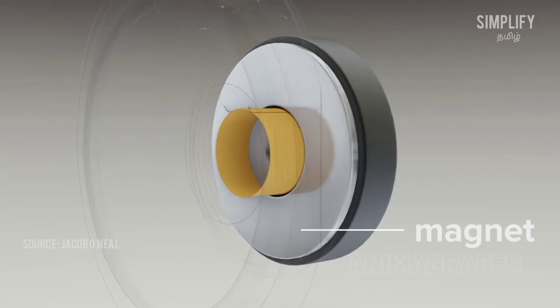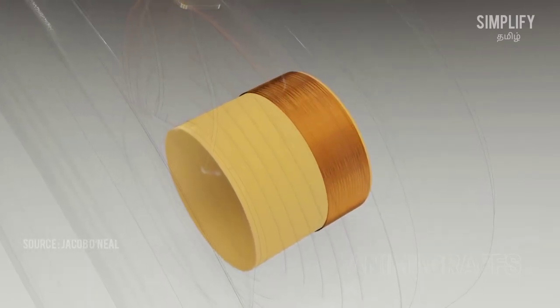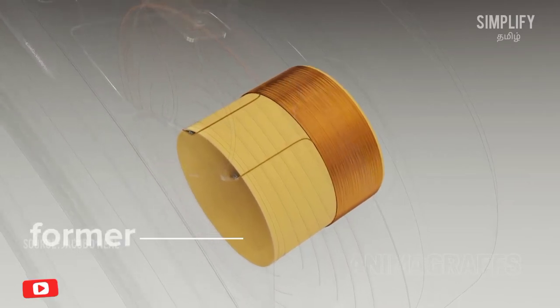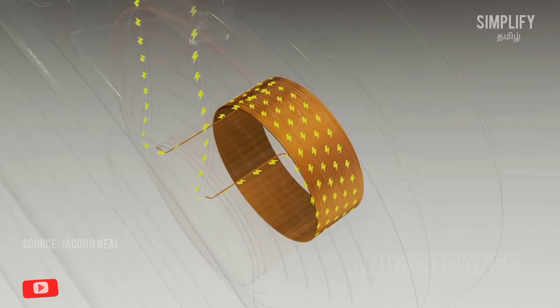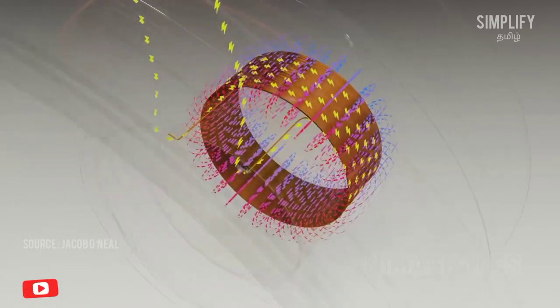This voice coil is a plastic cylinder. This cylinder has very thin copper wire. This cylinder creates a magnetic field. This cylinder is an electromagnet.